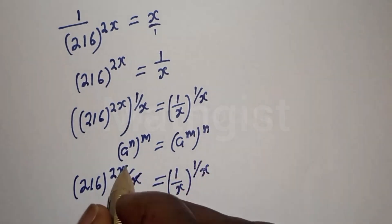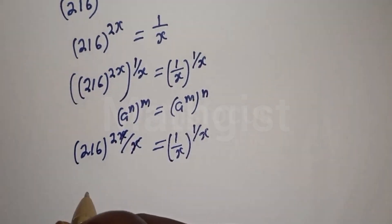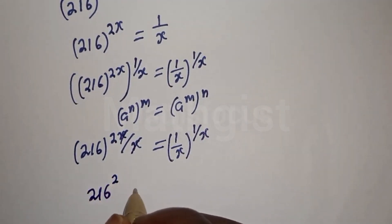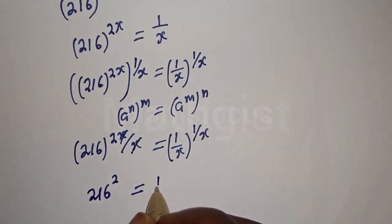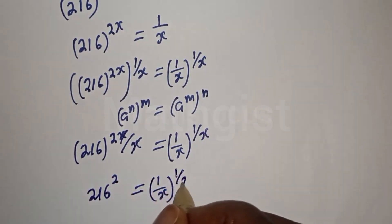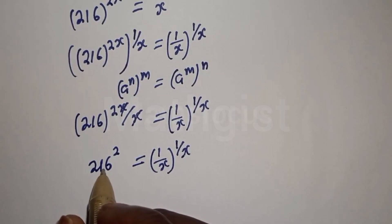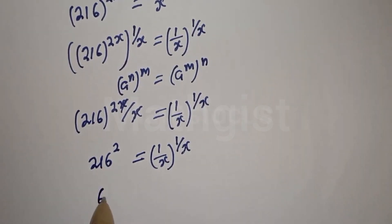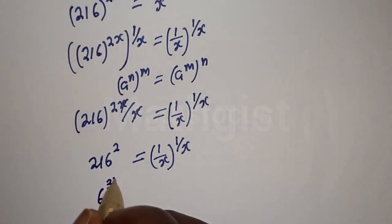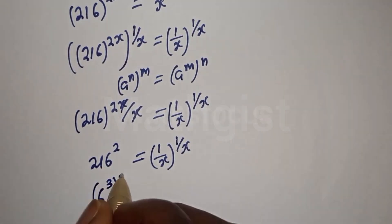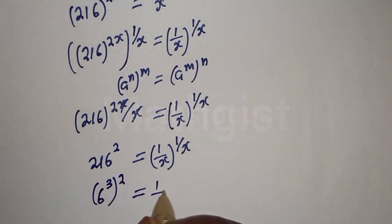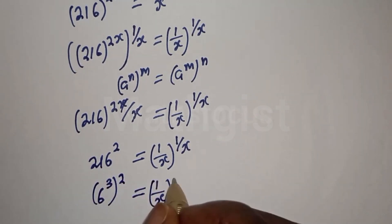The 2x over x cancels to give 2, so we have 216 squared equals one over x to the power of one over x. Now, 216 is the same as 6 raised to power 3, so we have 6 cubed, squared, equals one over x to the power of one over x.